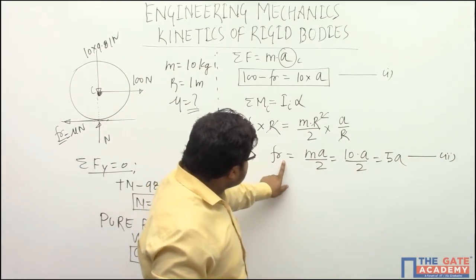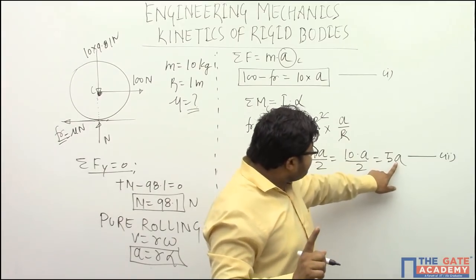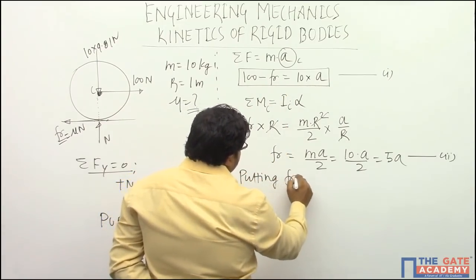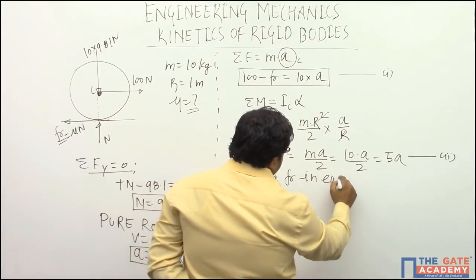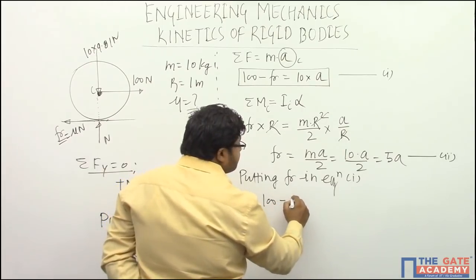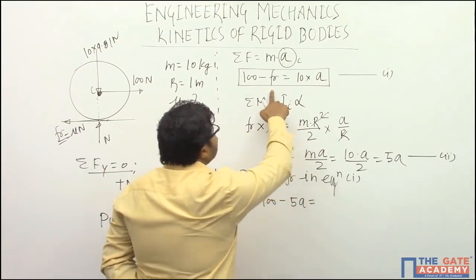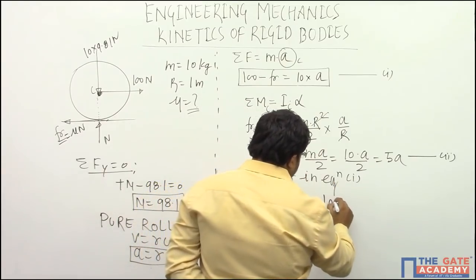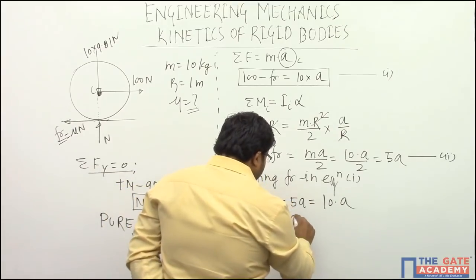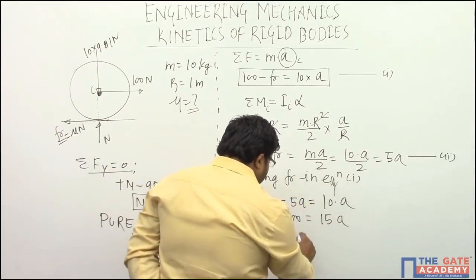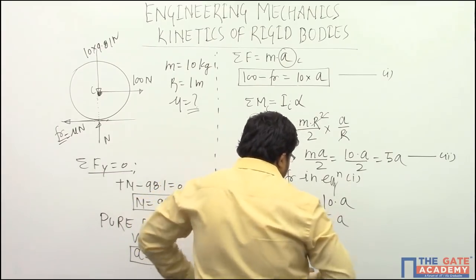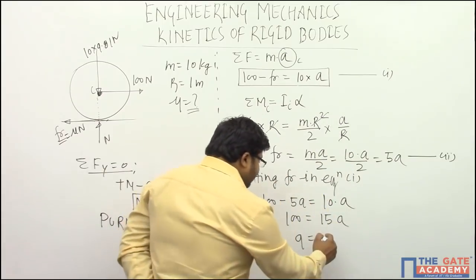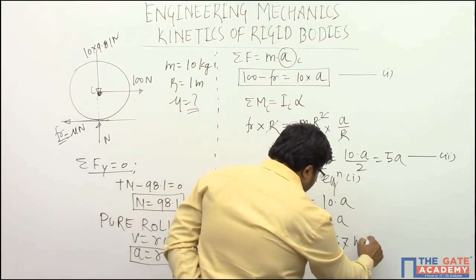Substituting F = 5a into the first equation: 100 minus 5a equals 10 times a. So 100 equals 15a, which means acceleration equals 100 divided by 15, giving us 6.67 meters per second squared.